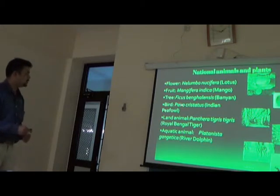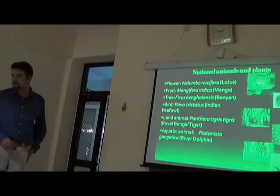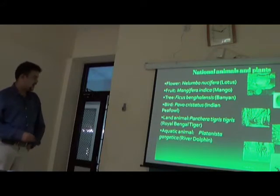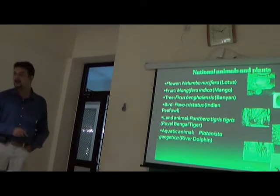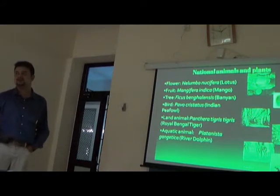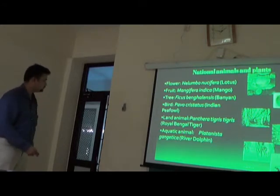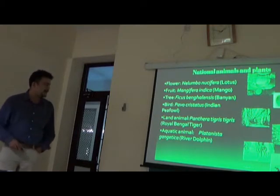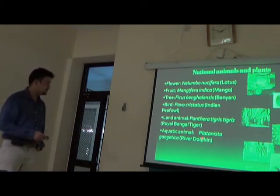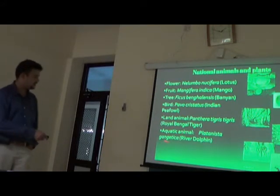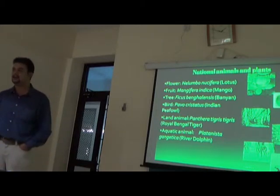India's national bird is peacock — Pavo cristatus — and the national land animal is tiger — Panthera tigris tigris — which is a trinomen, meaning three parts. Animals often have trinomens while plants and bacteria use binomial nomenclature. The national aquatic animal is the river dolphin — Platanista gangetica — and the second part 'gangetica' indicates it is found in the Ganges river.